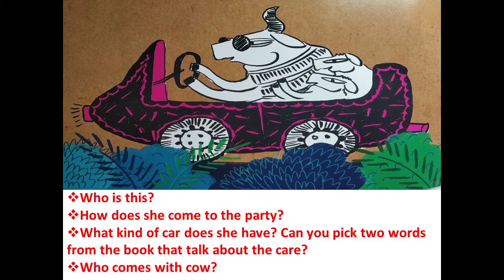The car is shiny and pink. So, shiny and pink are the two words that describe the car. Next question — who comes with cow? See, there is another animal also with cow. So, who is that?